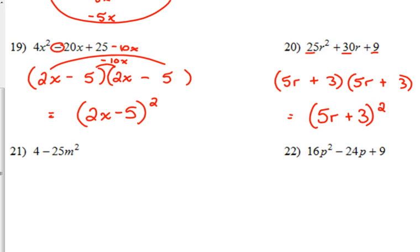21 is just another example of the difference of perfect squares. It's just written in a different order. The variable comes second, but it's still the same thing. We would have 2 plus 5m times 2 minus 5m in this case. You do not have to keep it in that order, but if you don't keep it in that order, you're potentially going to mess up the signs.